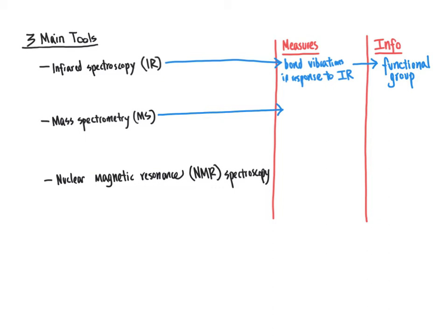Mass spectrometry is quite a different animal than IR spectroscopy. What mass spectrometry measures is the mass-to-charge ratio of ions. The symbol used to abbreviate this is M over Z — M for mass, Z for charge — representing the mass-to-charge ratio. You'll commonly see the abbreviation m/z to indicate that the mass spectrum of a particular ion has been determined.